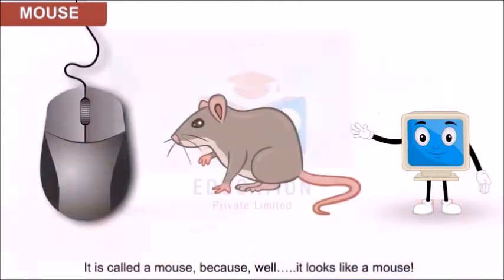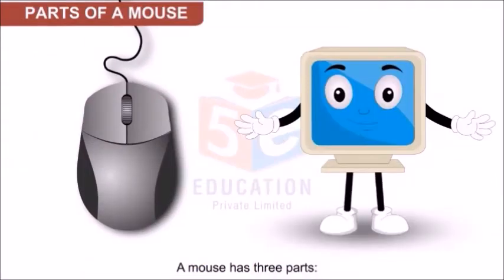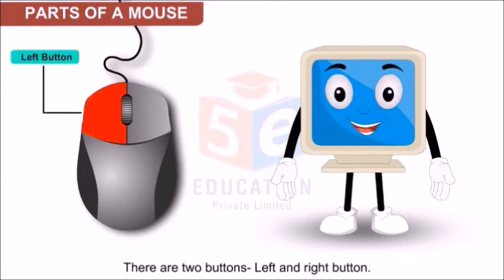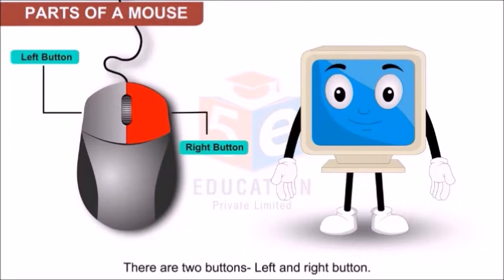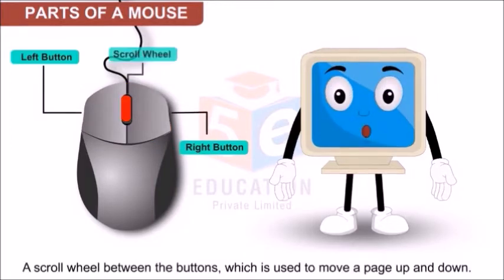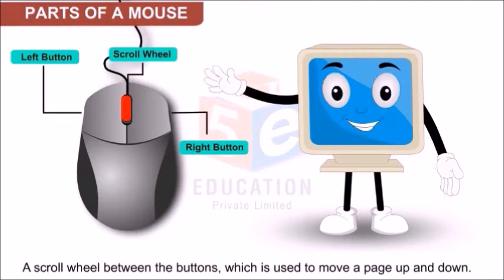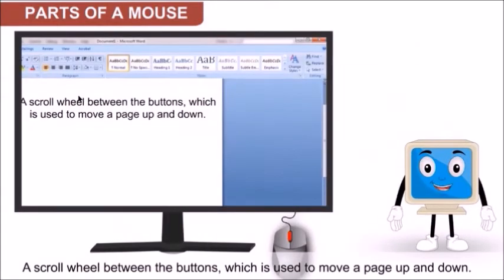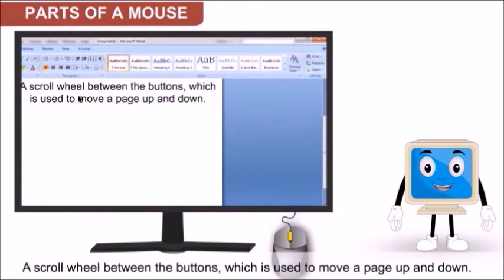A mouse has three parts. There are two buttons: the left button and the right button. There is also a scroll wheel between the buttons, which is used to move a page up and down.